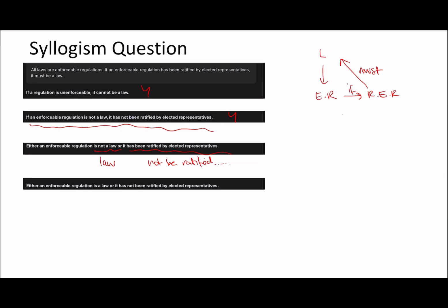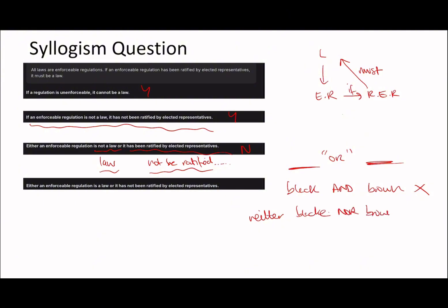Can they both be false at the same time? Can an enforceable regulation be a law and not be ratified? We know that if an enforceable regulation is ratified it has to be a law, but it could also be true that even if it isn't ratified it can still be a law. It doesn't say it's only if it's ratified that it's a law — it says if it is ratified it is a law. It's really important to make that distinction. The answer is no because it could be neither of those options. It's like saying 'my hair is black or brown' — it can't be both and it can't be neither.